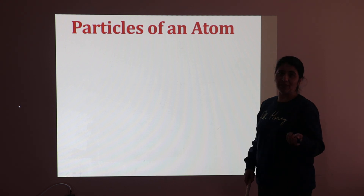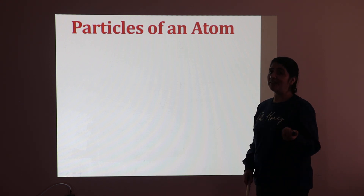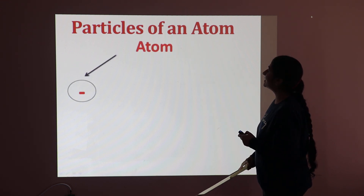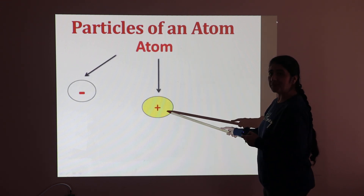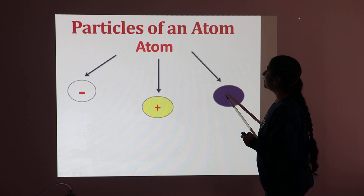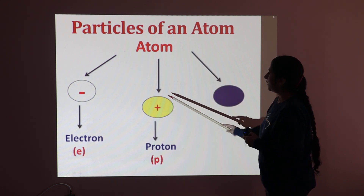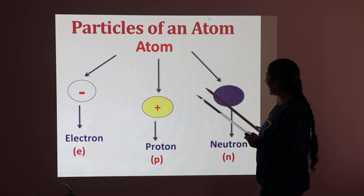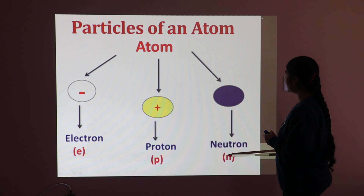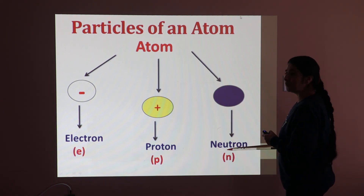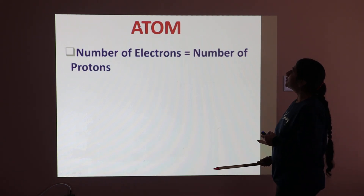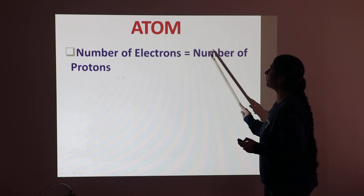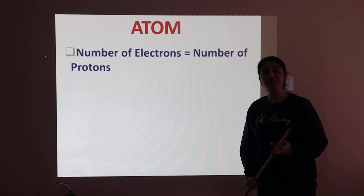As I discussed in my previous video, the atom is made up of three particles: number one is electron, second is proton, and third is neutron. The negatively charged particle is known as electron, the positively charged particle is known as proton, and the neutral particle is known as neutron. In an atom, the number of electrons is equal to the number of protons because the atom is neutral.